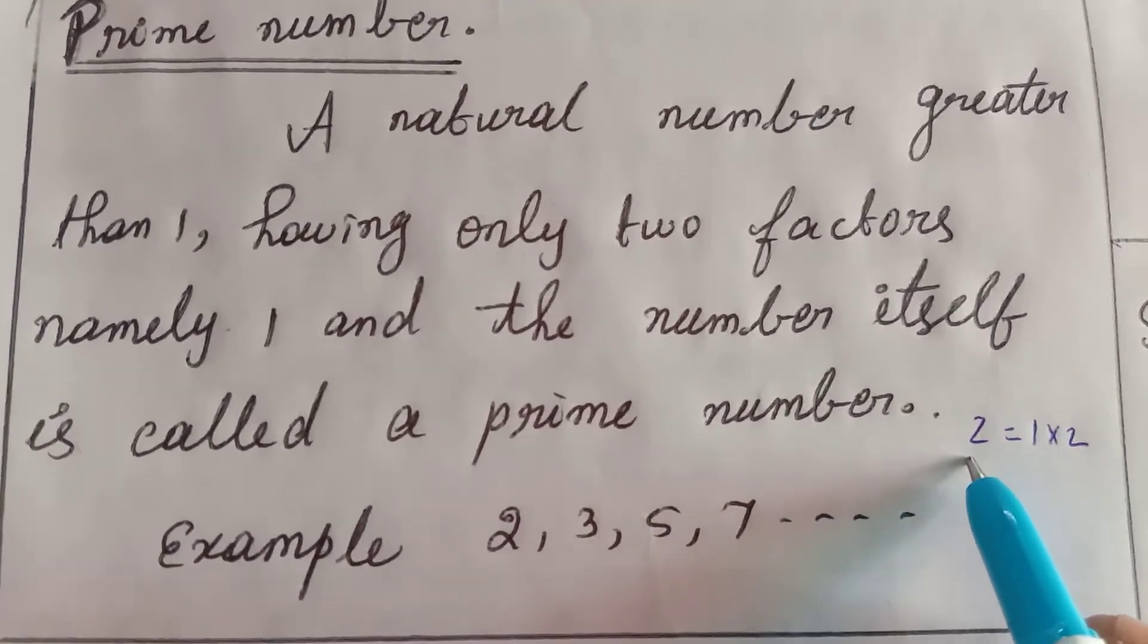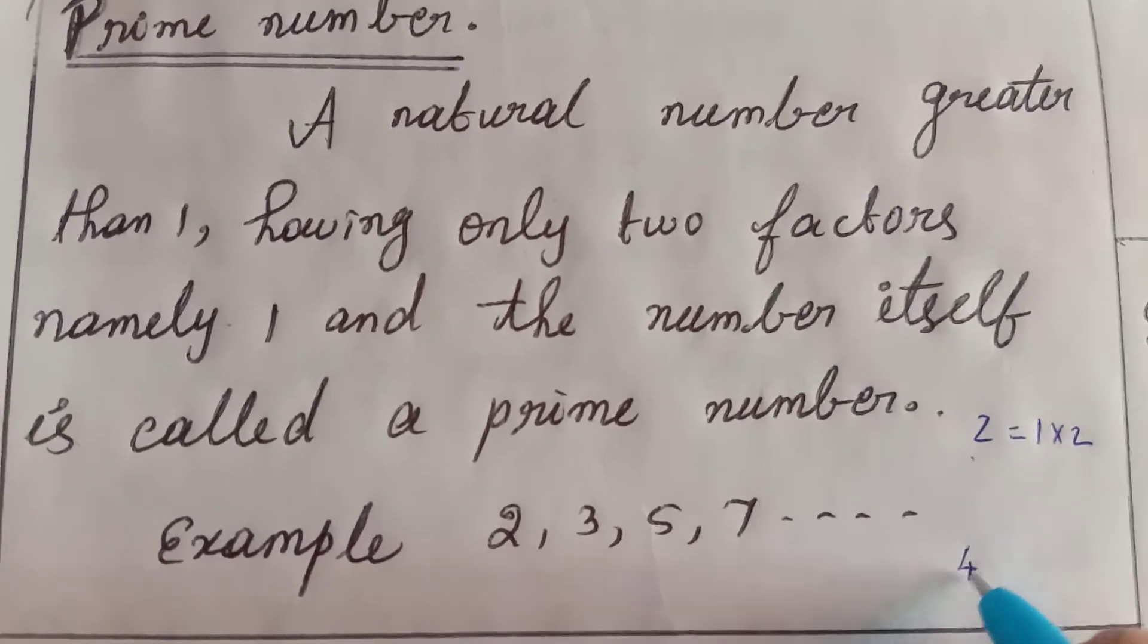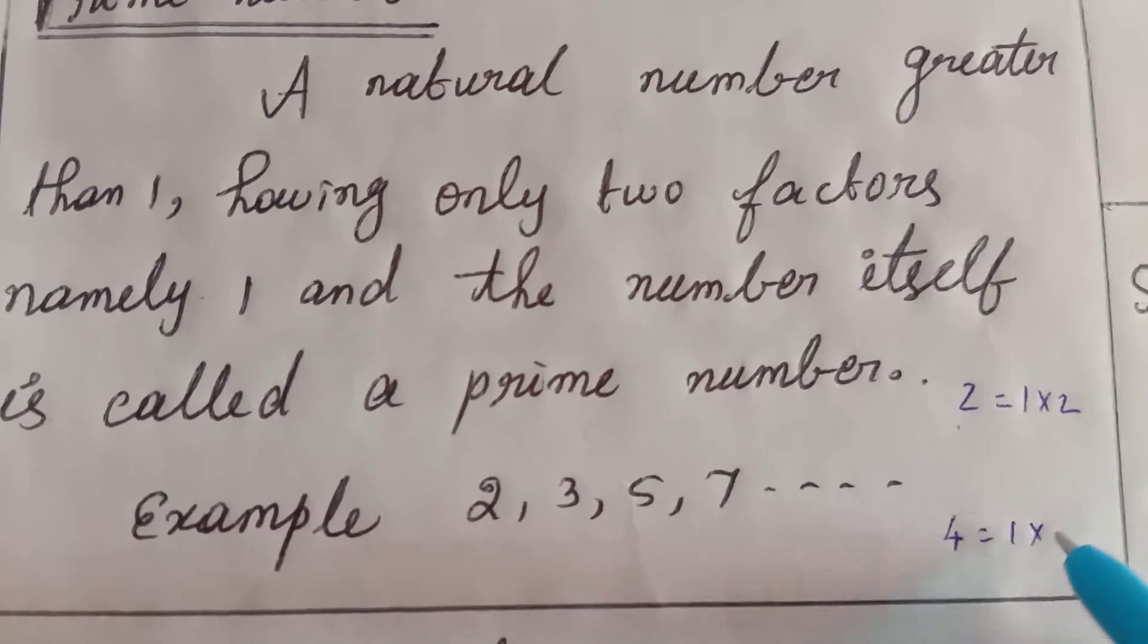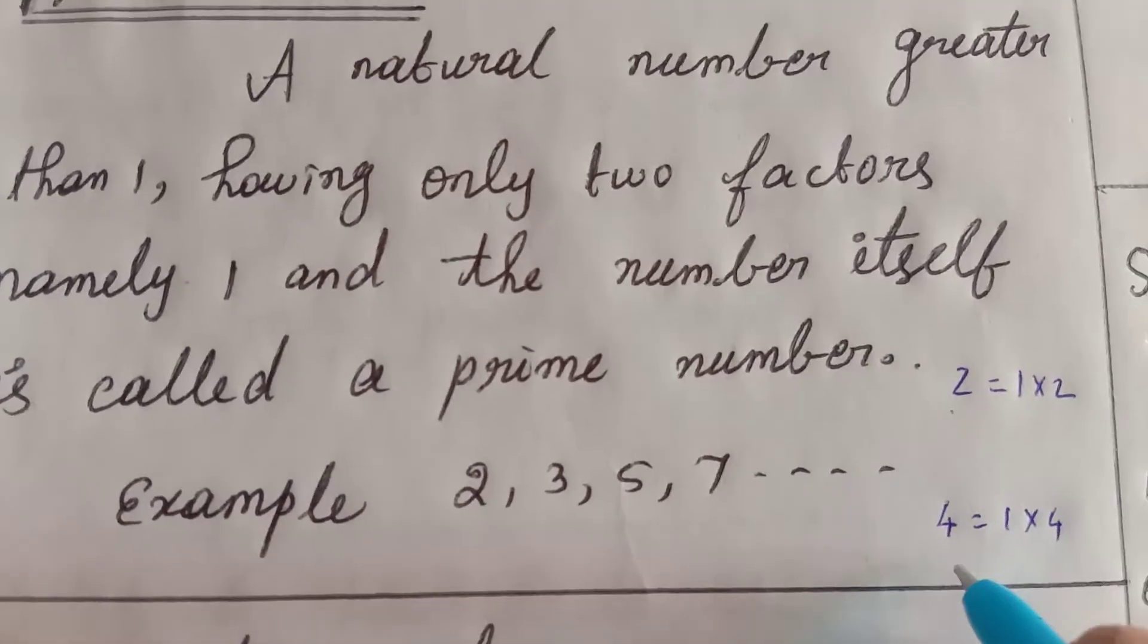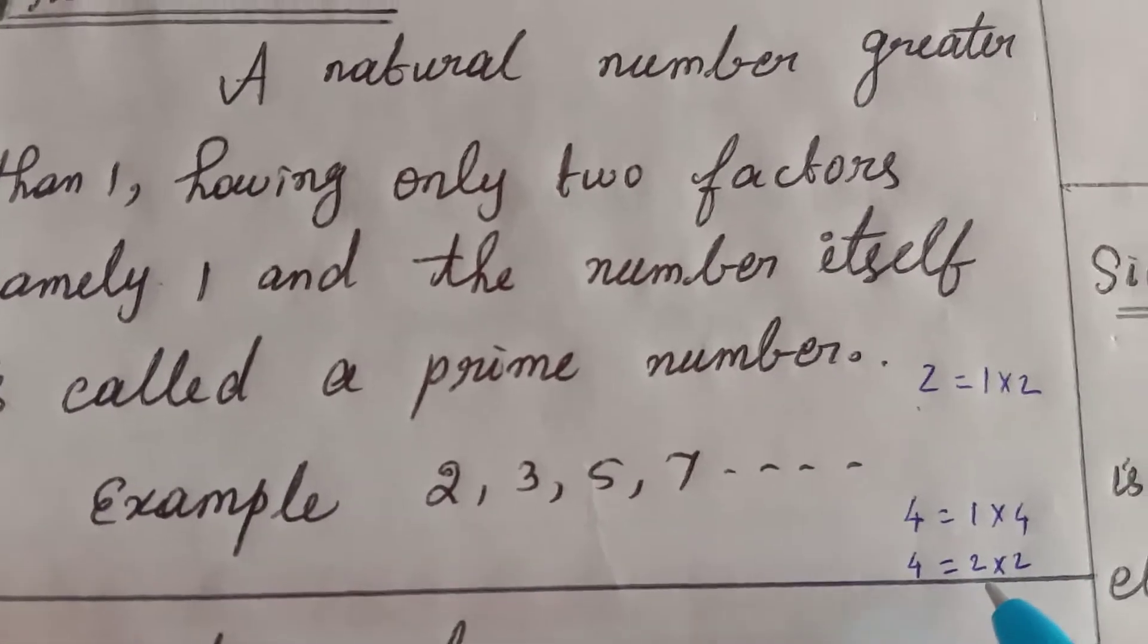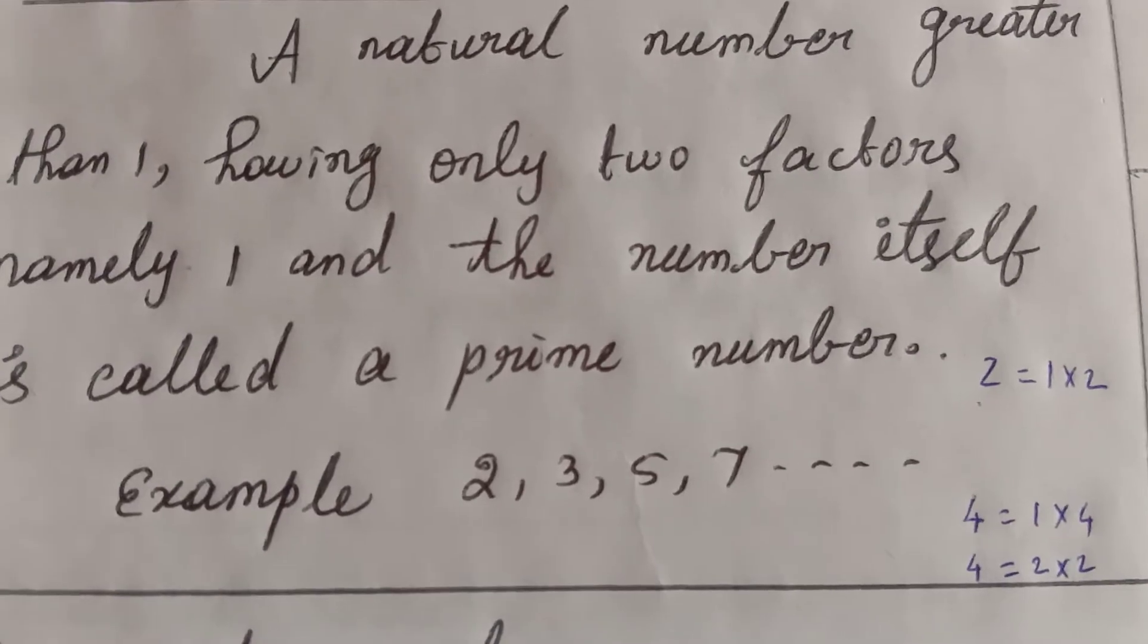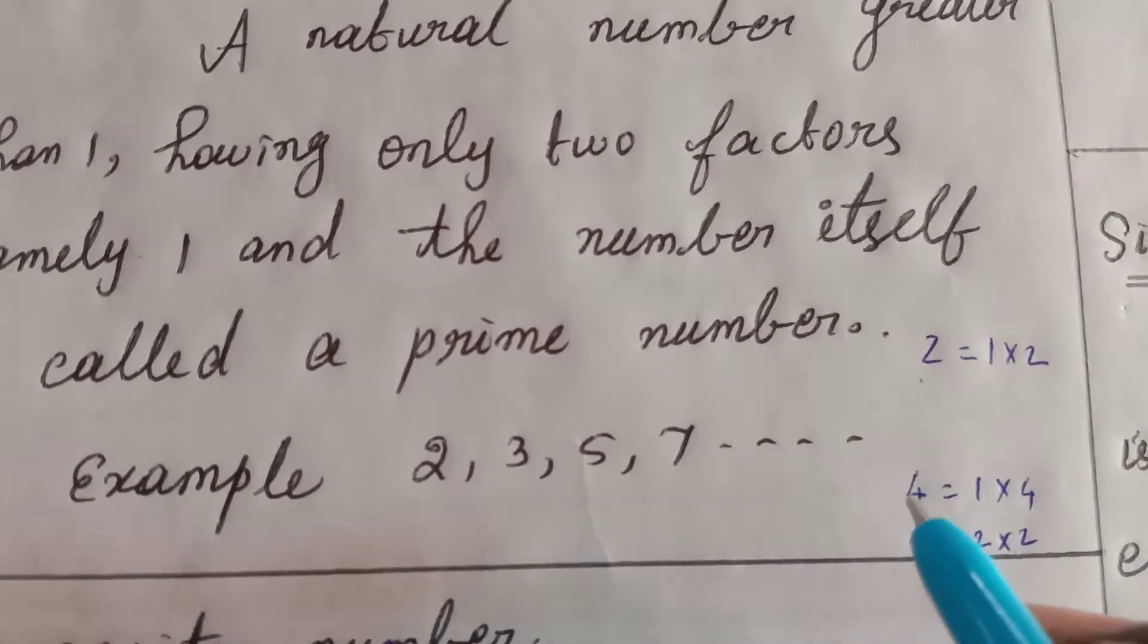So 4 is equal to 1 into 4. At the same time, we can write 2 into 2. So 4 is a composite number. 4 is not a prime number.